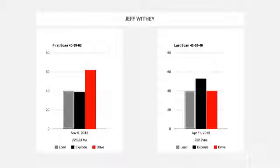If anybody knows who Jeff was, he'd dunk the ball and then land and fall backwards because he wasn't able to decelerate through his ankles and knees. Then we got the technology.